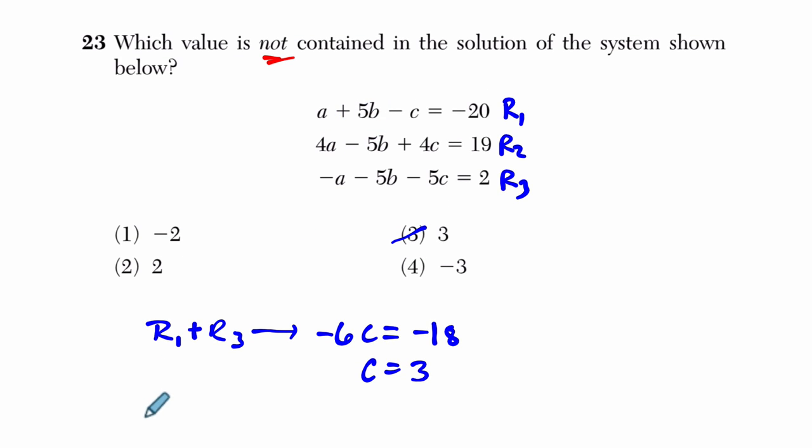You've got two opposites right here. So let's add row 1 plus row 2 and see what happens. I get a plus 4a is 5a, and I get 5b plus negative 5b is nothing, and negative c plus 4c is 3c. But wait a minute. We know c equals, I mean, c is 3.